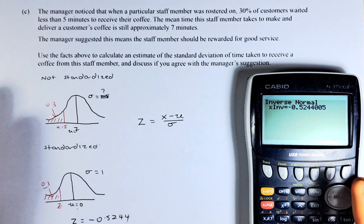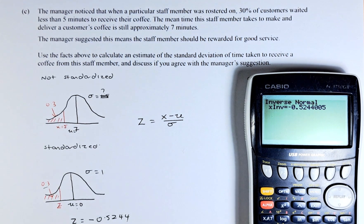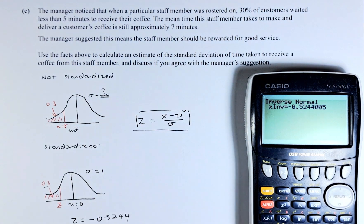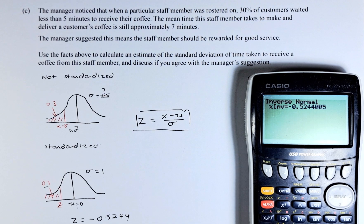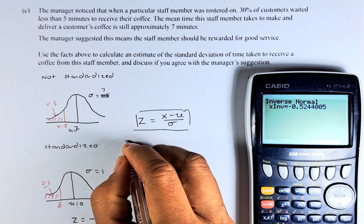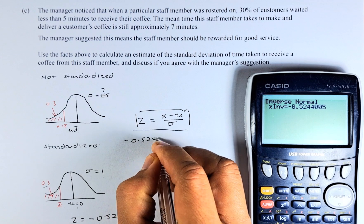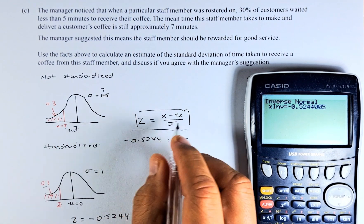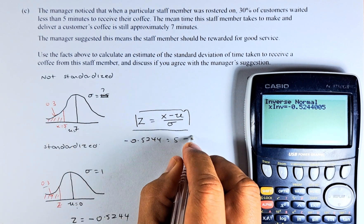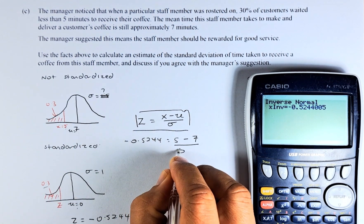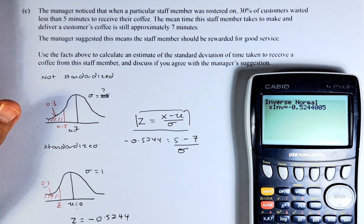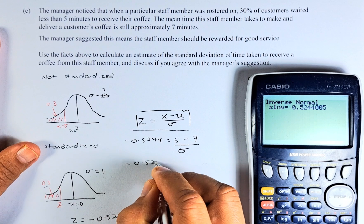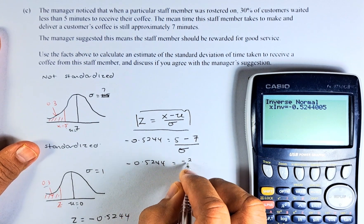Once we have done that, we are going to substitute this Z into the equation. This equation is given on the formula sheet: Z equals X minus nu over sigma. Z is the number we found, negative 0.5244. X is the number here, 5. Nu is the mean which is 7. And sigma is what we're going to find. So now using your algebra skill, negative 0.5244 equals negative 2 over sigma.